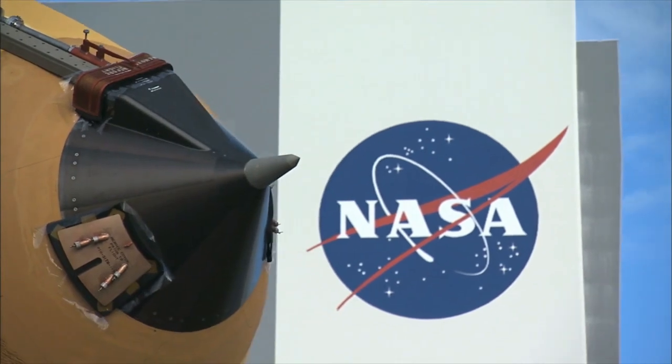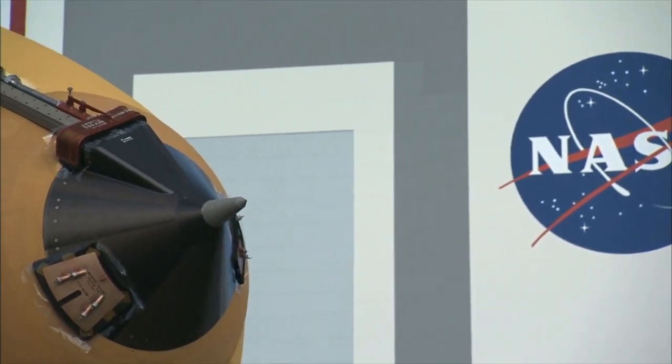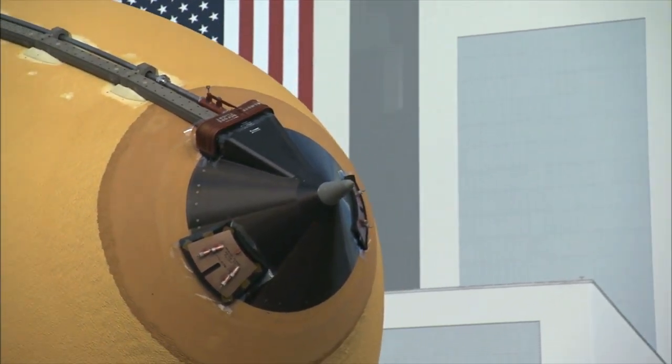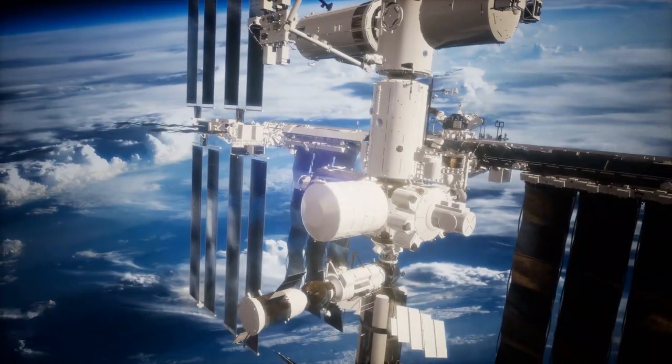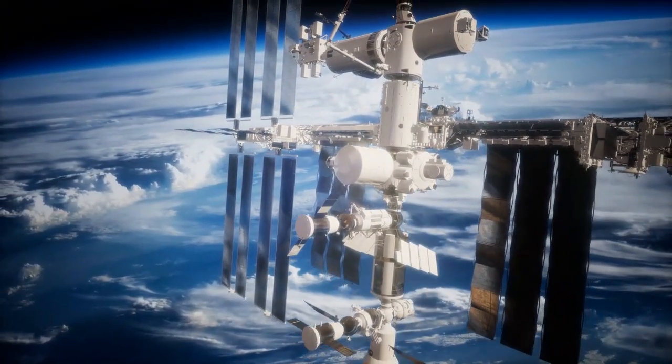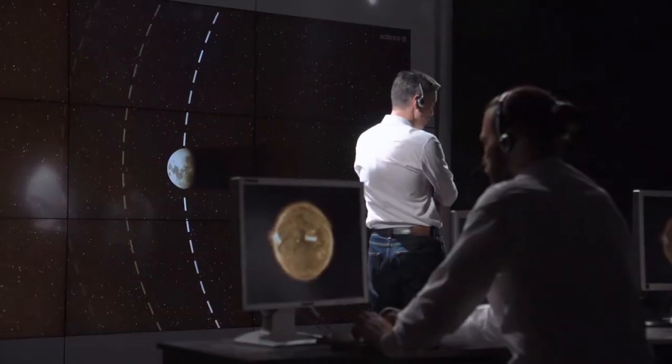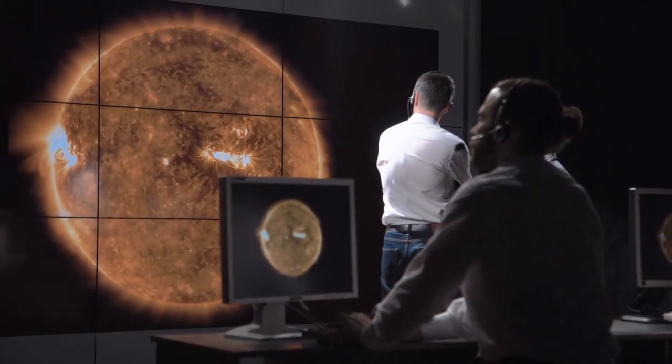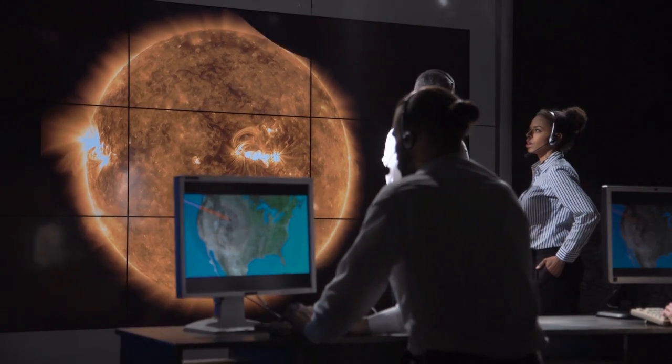As Voyager 1 journeys through the uncharted territory of interstellar space, it faces a constant barrage of high-energy cosmic rays, radiation strong enough to take a toll on its electronics. This radiation can wreak havoc on the spacecraft's systems. High-energy particles can create microscopic flaws in semiconductors, weaken transistors, and gradually degrade the performance of electrical circuits. Over time, these small damages accumulate, causing systems to become less efficient or fail altogether.